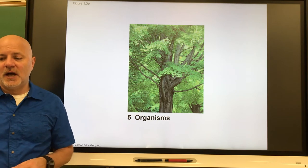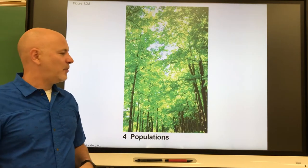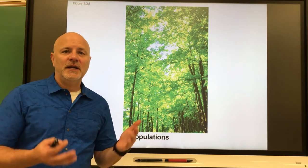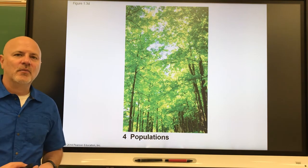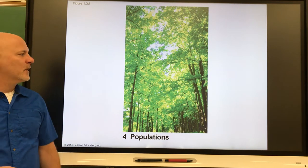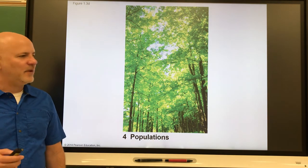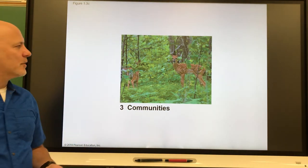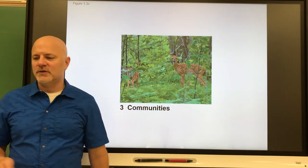Above organ systems is the organism level — an organism is an individual living thing, shown here as a tree. Above that is a population: a group of individuals of the same species living in the same area at the same time. The qualifiers 'same area, same time' mean they must be able to interbreed. Next is a community, which includes all the organisms living in a given area — plants, animals, fungi, and microorganisms all together.